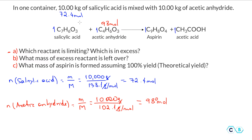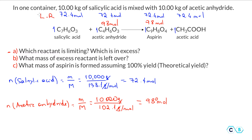But the correct way, no matter what the ratio is, is to determine which reactant gives you less product. So 72.4 moles of salicylic acid will react with 72.4 moles of acetic anhydride and produce 72.4 moles of aspirin. If we calculate based on acetic anhydride, it gives 98 moles. Comparing, 72.4 is less, so salicylic acid is the limiting reactant.